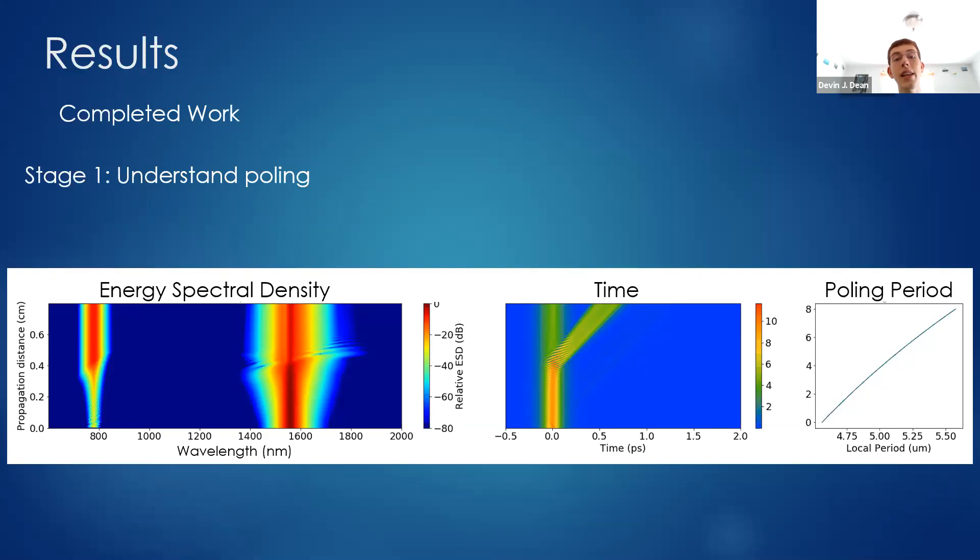An example of the kind of plots I look at for the results is shown here. I change the poling parameter as a function of distance or length in the waveguide. In the middle, I can observe the simulation output of the pulse in time, and on the left I can look at how much energy is at a specific color over the length of the waveguide.